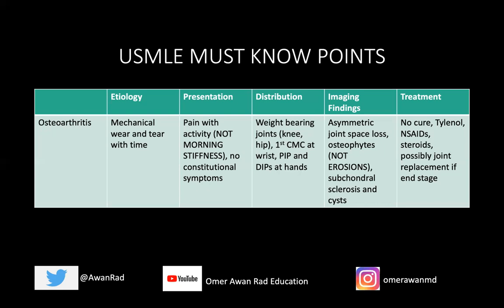And of course you get subchondral sclerosis and subchondral cysts. There is, of course, no cure to osteoarthritis, but you can give Tylenol, NSAIDs, possibly intraarticular steroids that can halt the progression of osteoarthritis. Ultimately, if it gets very severe and it limits your function, we can consider a joint replacement for end-stage osteoarthritis.